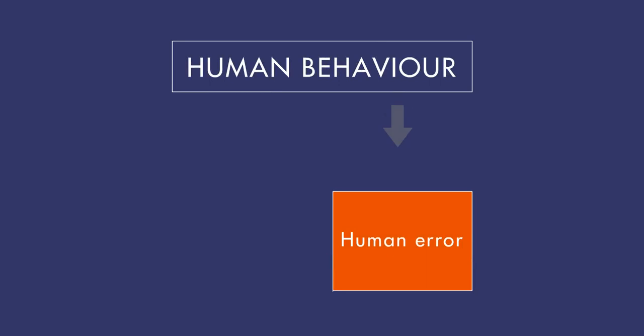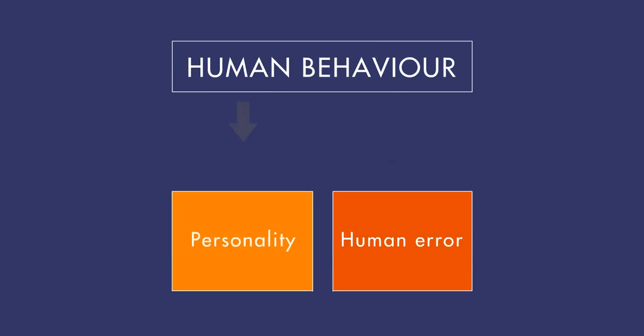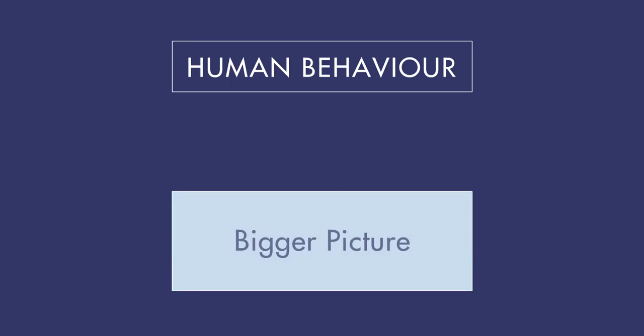When trying to understand why a person has done something, people often explain it as simply human error or as part of their personality. This is unhelpful and often wrong. To learn from the consequences of others' actions, we must look at the bigger picture to understand why they did that, sometimes called a system view.